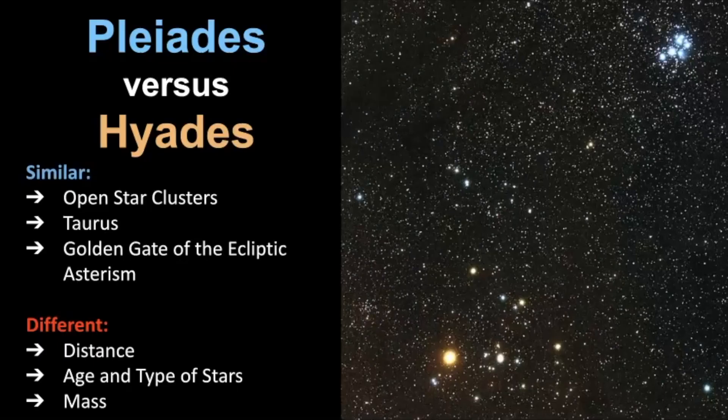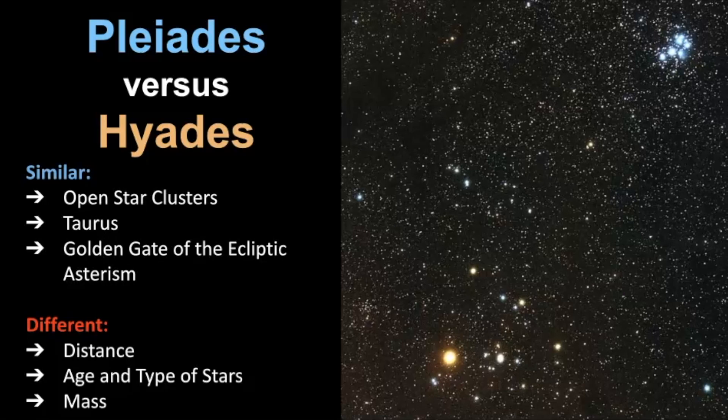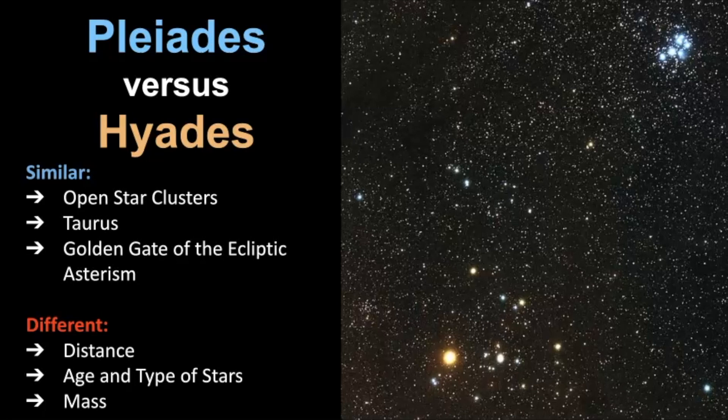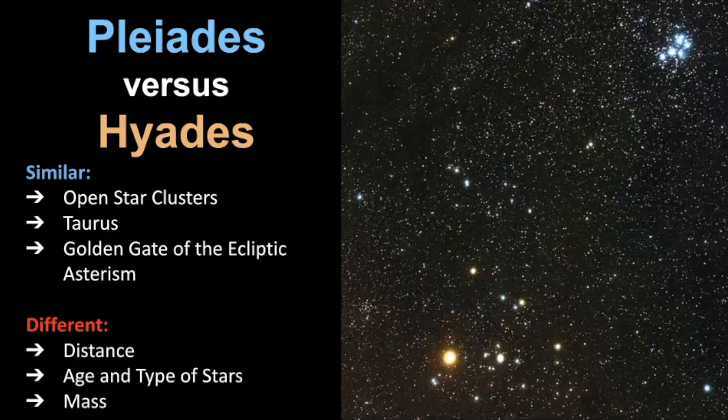So before we wrap up this video, let's review the similarities and differences between the Pleiades and the Hyades. They are similar because they're both open star clusters in Taurus and together they make up the asterism called the Golden Gate of the Ecliptic. In terms of their differences, they're different in terms of their distance from us. The Hyades is a lot closer than the Pleiades but in reality they're both fairly close to Earth when you compare it to other star clusters out there.